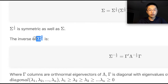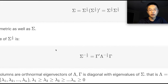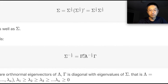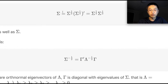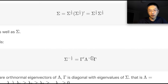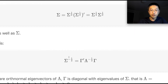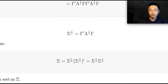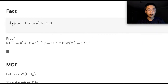We can also find the inverse of the square root of sigma. The inverse of the square root of sigma is gamma-transpose times lambda with each diagonal entry replaced by its inverse square root, times gamma. If we multiply the inverse square root of sigma with the square root of sigma, we get the identity matrix. So let's now look at the covariance matrix sigma.